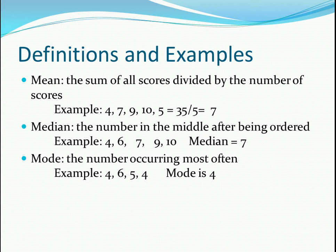The median is the number in the middle after they're ordered from least to greatest. So for this example, you have 4, 6, 7, 9, and 10. If you find the middle, 7 is the middle. That one's easy because you have an odd number, so there's only one number in the middle. But if there is an even number of values, you average the middle two, because there's not going to be just one number in the middle.